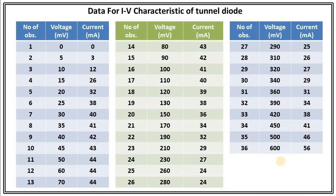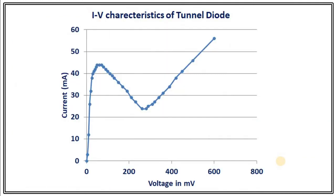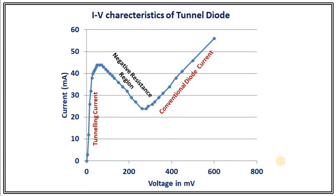This is the table of data which we have got for the IV characteristic of the tunnel diode. I have summarized it here and I am going to plot this data. The graph has three regions. One: tunneling current — there is an increase in current with the initial increase in voltage, due to the tunneling effect in the tunnel diode. Then, this tunnel current decreases with the increase in voltage, which is the negative resistance region. And finally, conventional diode current — after a certain threshold voltage, the tunnel diode will behave as a normal diode.